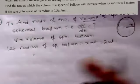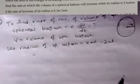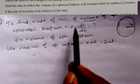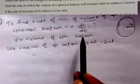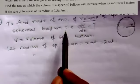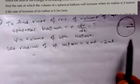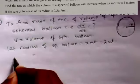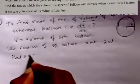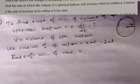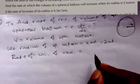In this type of question, two things will be given and one thing will be asked. We have to find dV/dt — the rate of increase of volume. Also given is the rate of increase of radius, which is 0.3.